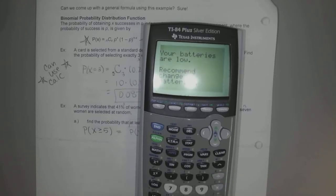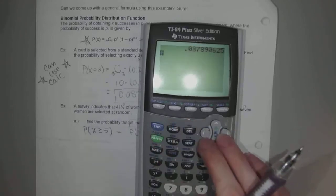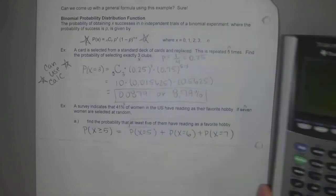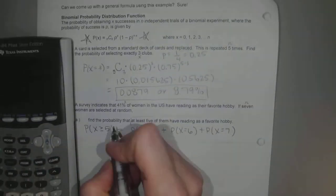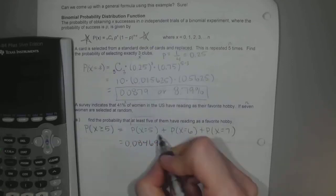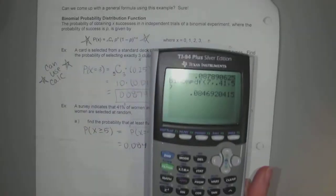Let's just see. So we're going to go to second vars, and we're going to scroll down to binomial PDF, and we're going to do it for five first. My calculator is going to die. All right. So you go down to binomial PDF, and you choose it. How many total women are we asking? Seven. What's the probability they say reading is their favorite hobby? 41. And how many women are we worried about saying yes initially? Five. So round that to like five decimals. 0.08469. Did you get that?